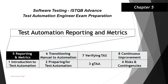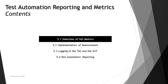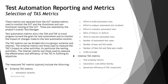Hello friends, and greetings for the day. Welcome back to another tutorial on ISTQB Advanced Test Automation Engineer. We are getting started with Chapter 5. So far we have covered four chapters including the sample questions. In Chapter 5 we will have four topics broadly classified into: selection of test metrics, implementation of measurement, logging of the tasks and the SUT, and test automation reporting. In this chapter we are talking about different reporting methods and metrics useful in a test automation solution. The very first topic is 5.1 — selection of test metrics.